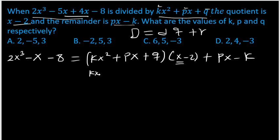It will be kx³ plus px² plus qx. Again, -2 will multiply each of them: -2kx², -2px, -2q. Then plus px minus k.